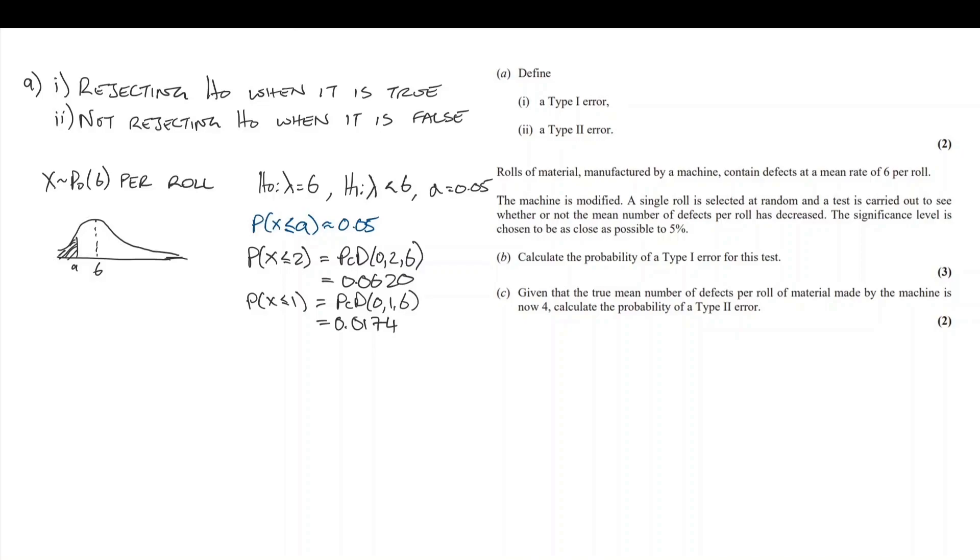The wording of the question asks us to be as close as possible to 5%. Although we usually go for less than the significance level, this time we're trying to go for as close to the significance level as possible. So we are actually going to pick less than or equal to 2, which has a probability a little bit larger than our 5%.